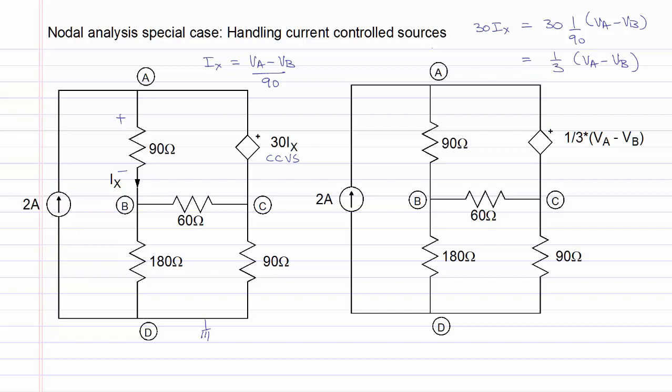We have redrawn the circuit on the left, on the right-hand side, and replaced the current-controlled voltage source by the value 1 third VA minus VB. Also notice that the voltage VA minus VB is the same as the voltage VX, which is the voltage across the 90-ohm resistor, such that the value of this voltage source can be written as VX over 3. We have effectively converted a current-controlled voltage source into a voltage-controlled voltage source.